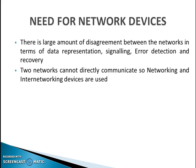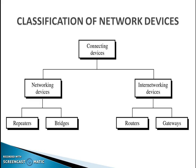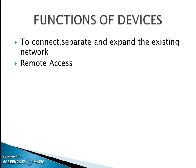Now let's look at the classification of our network devices. These devices are classified into two broad categories: networking devices and inter-networking devices. Under networking devices, we are going to study repeaters and bridges. Under inter-networking devices, we are going to look at routers and gateways in detail. These devices have broad functions of either connecting, separating, or expanding the existing networks. They are also used for remote access of data.